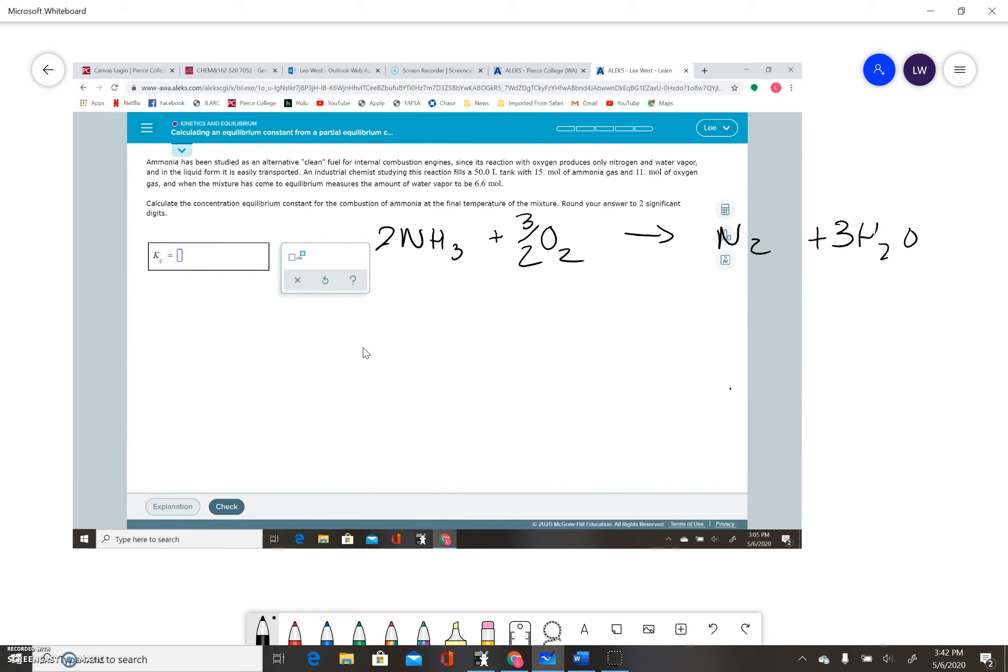That just looks weird, so we're going to multiply everything through by 2. Then that becomes 4NH3, that becomes 3O2, that becomes 2N2, and this becomes 6H2O. You've got yourself a nice balanced equation.